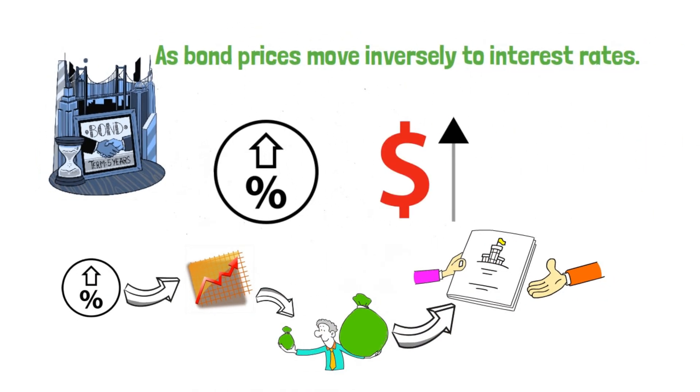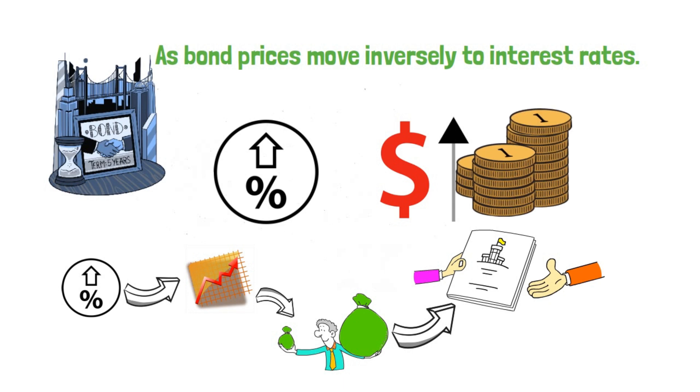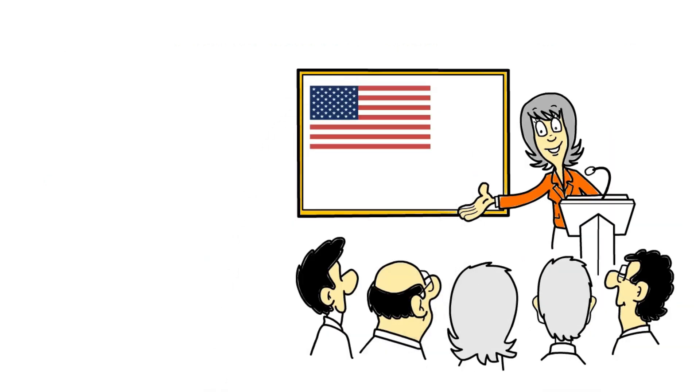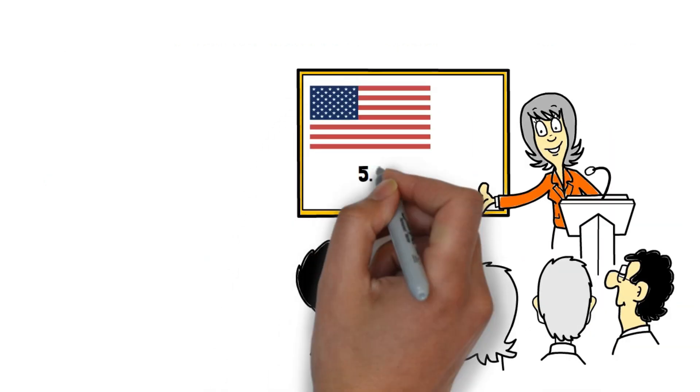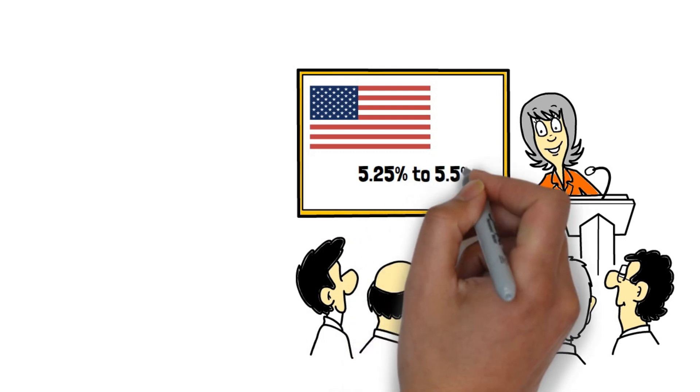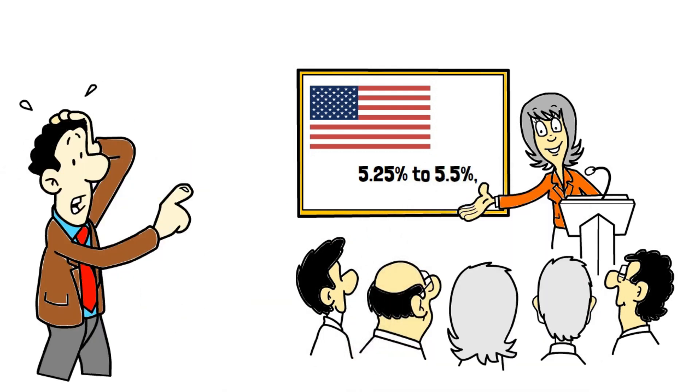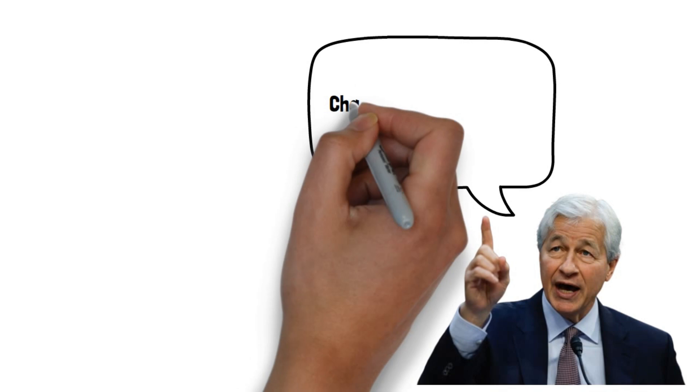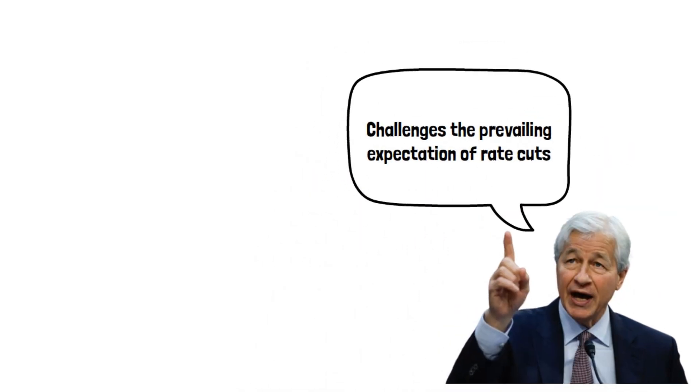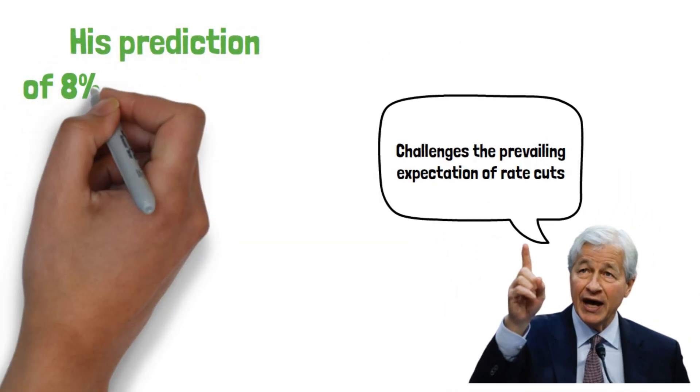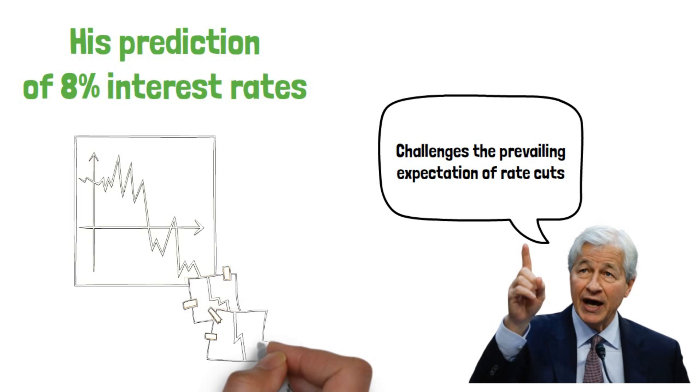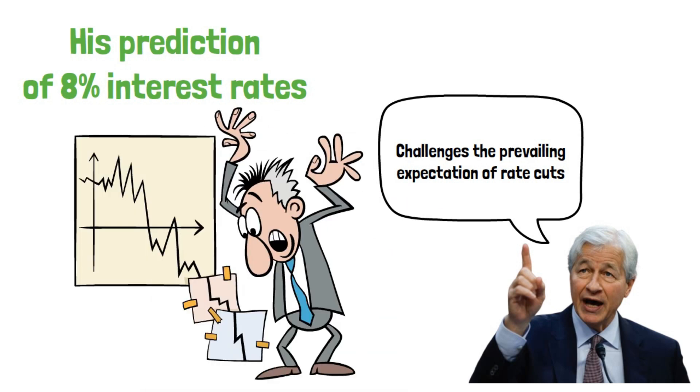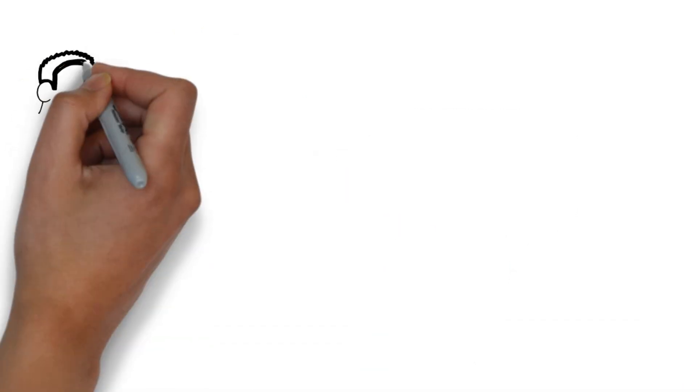Interest rates in the United States have recently hovered around 5.25% to 5.5%, a level higher than what we've seen in the past two decades. Jamie Dimon, the CEO of JPMorgan Chase, has issued a stark warning that challenges the prevailing expectation of rate cuts. His prediction of eight percent interest rates reflects concerns about inflation and its potential impact on the economy.